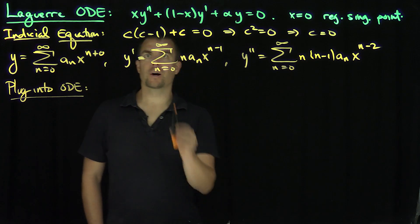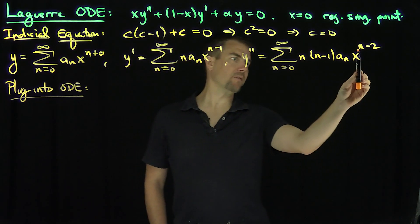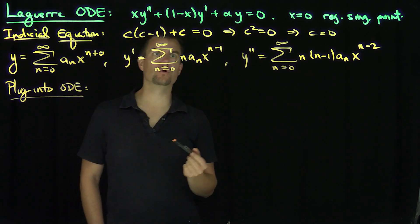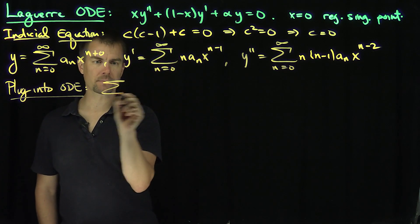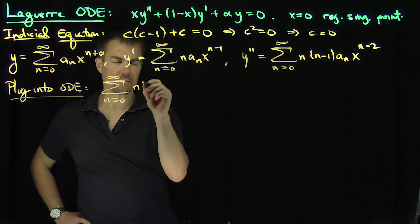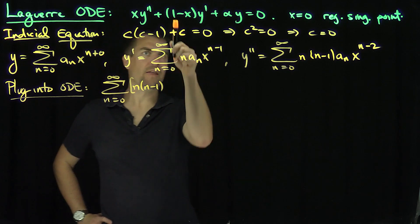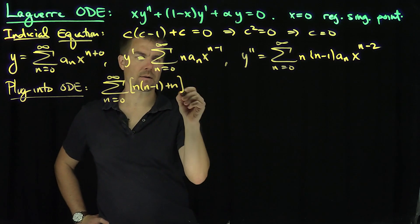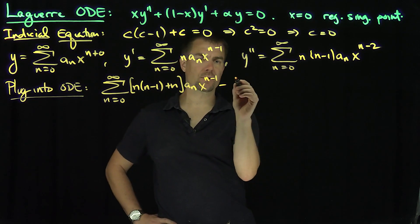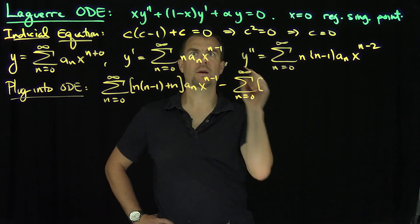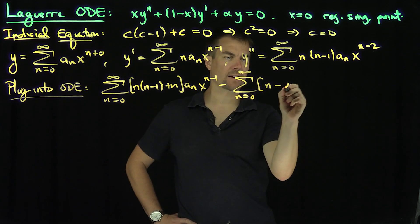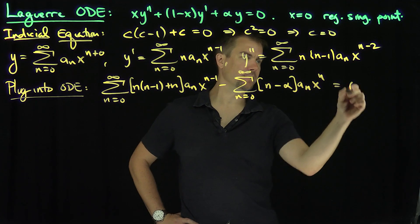Gathering terms efficiently: the term x times y double prime gives powers of x to the n with an n times n minus 1 factor. The term 1 times y prime also gives an n minus 1 exponent. Grouping those first two terms together gives the sum from n equals 0 to infinity of n times n minus 1 a_n x to the n minus 1, plus n a_n x to the n minus 1. Then minus the sum from n equals 0 to infinity of n a_n x to the n, plus alpha times a_n x to the n equals 0.